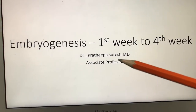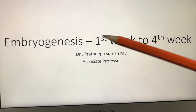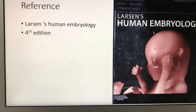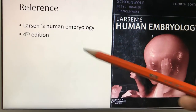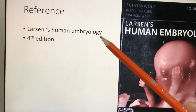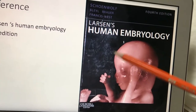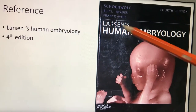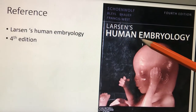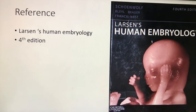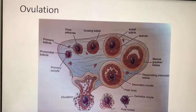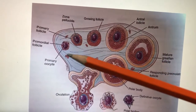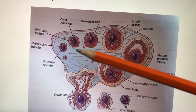We are going to see the embryogenesis from the first week to the fourth week. The reference I have taken is from Larson's Human Embryology, fourth edition. Whatever Dr. Larson says, only that is presented here. First we'll see from ovulation — what happens — such an interesting story.